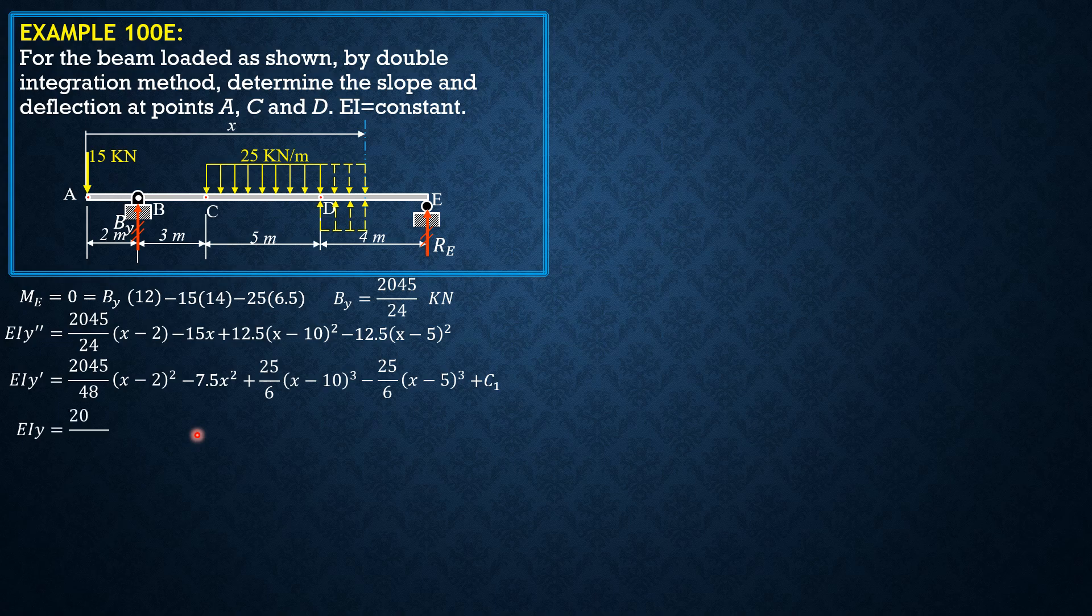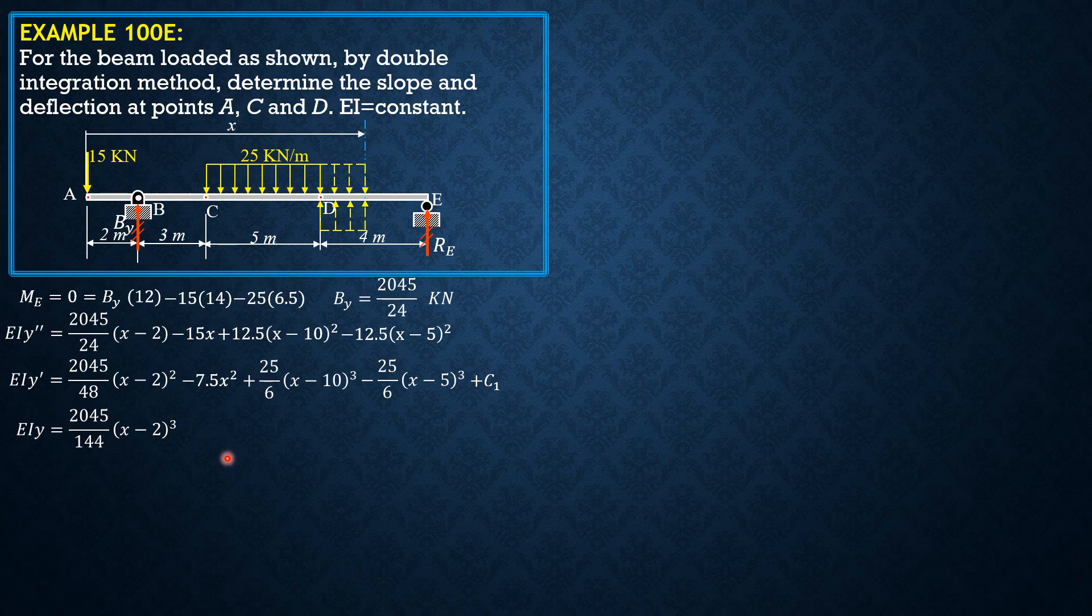Integrate again. EI Y equals 2045 over 144 times (X minus 2) cubed minus 2.5X cubed plus 25 over 24 times (X minus 10) to the fourth minus 25 over 24 times (X minus 5) to the fourth plus C sub 1 times X plus C sub 2. Again, there are C sub 1 and C sub 2 because A will deflect.